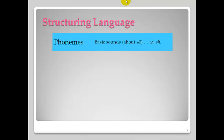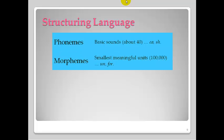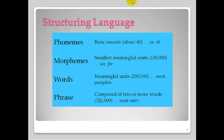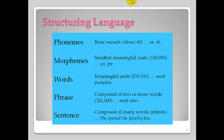So here's a quick review. Remember, phonemes are basic sounds. There's about 40 in the English language. Morphemes are the smallest meaningful units in the English language. There's about 100,000 of these. Prefixes, suffixes, etc. There's about 290,000 words in the English language. And if we connect two or more words to make a phrase, we have about 326,000 of those. And with those words, phrases, morphemes, we really have about an infinite number of sentences we can create using those.